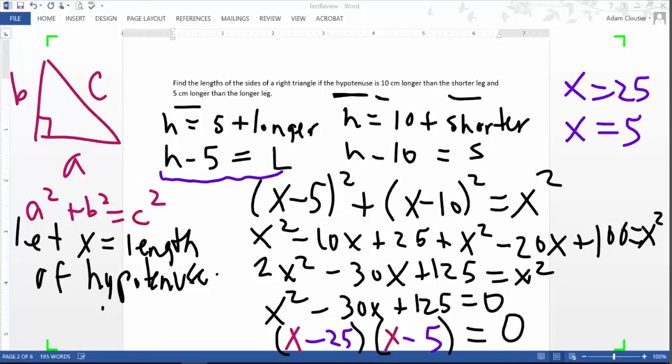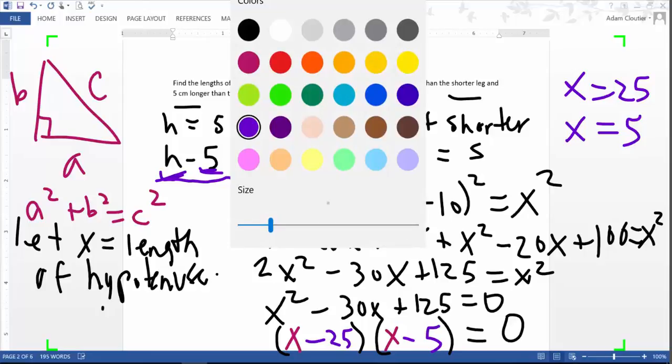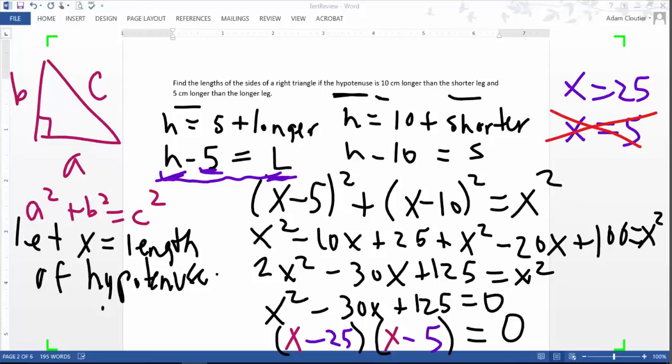what would that tell us about our longer side? If X is really the hypotenuse or H, 5 minus 5 gives me zero. How can I have a length that's zero for a triangle? In other words, that is not a good solution.